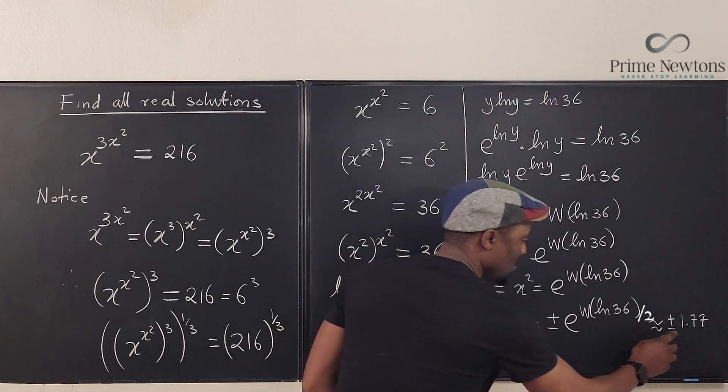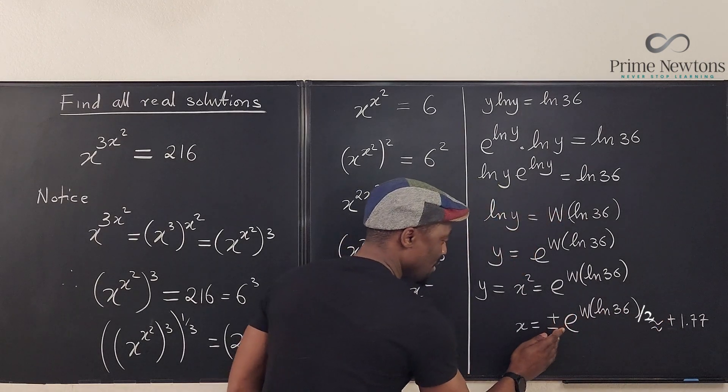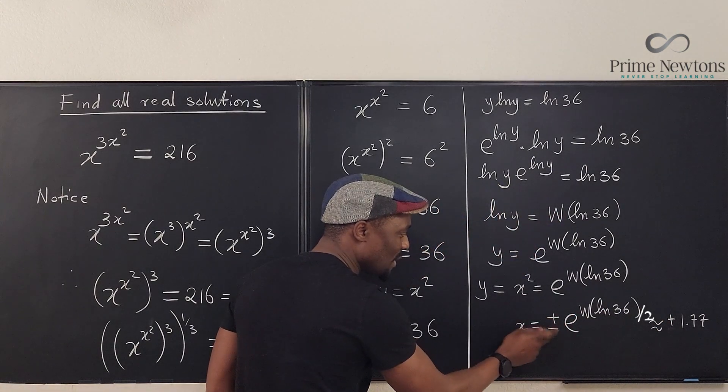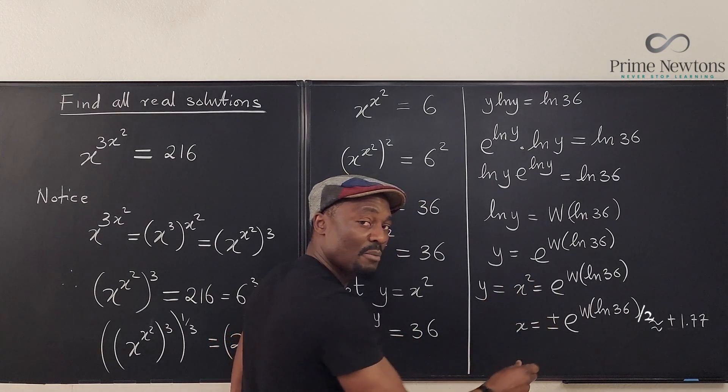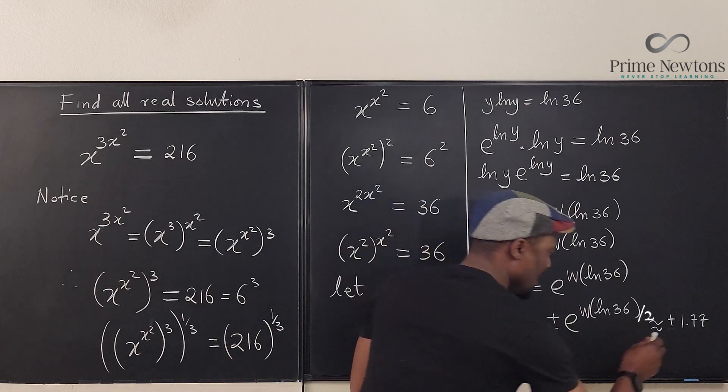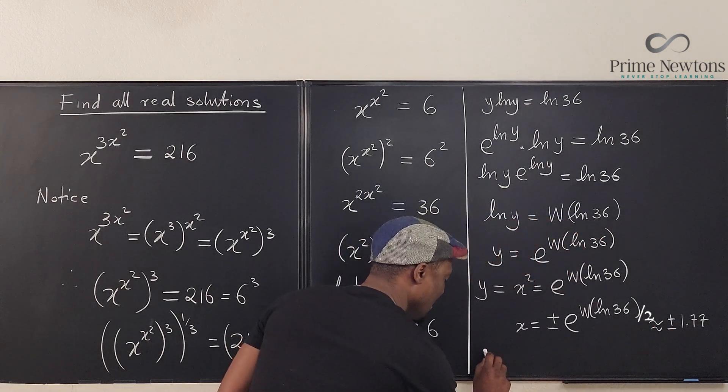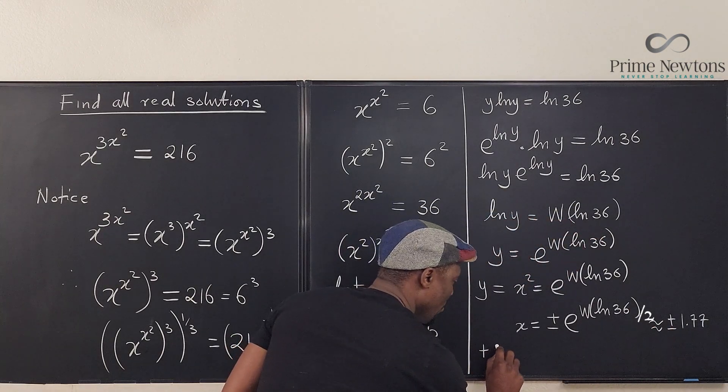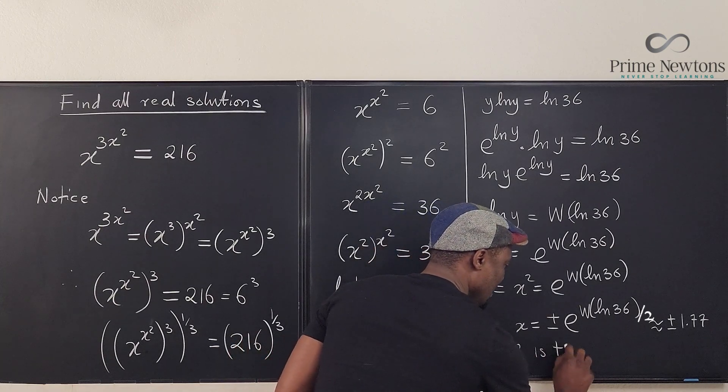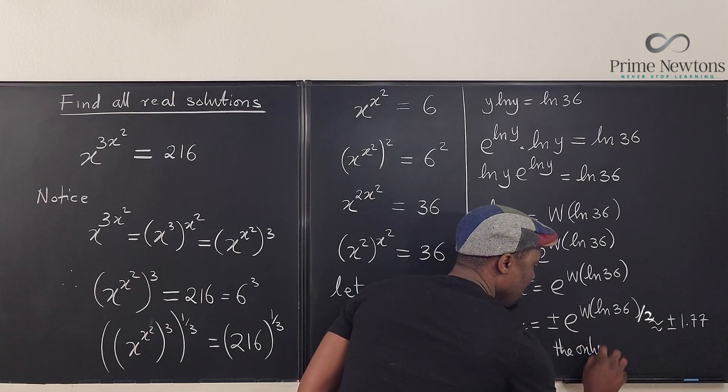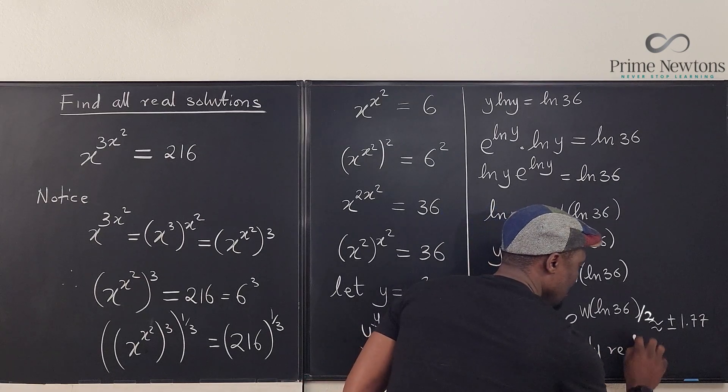But for now, know that the only acceptable answer is the positive version. So we're not going to deal with this. But I wanted to do this so you can see that it is possible to get two answers. But if you want it to be real, let's do plus or minus. We say that plus 1.77, the approximate value is the only real solution. Keep this in mind.